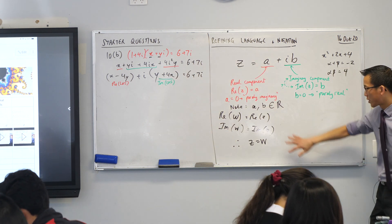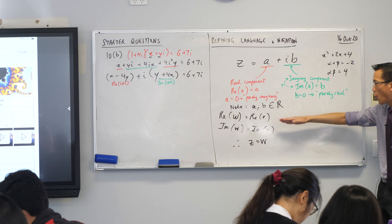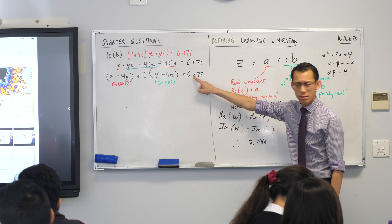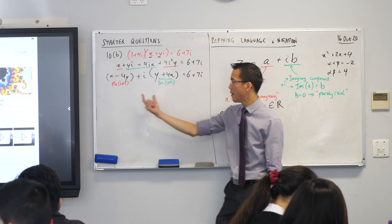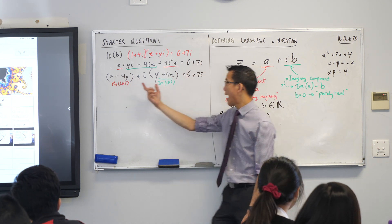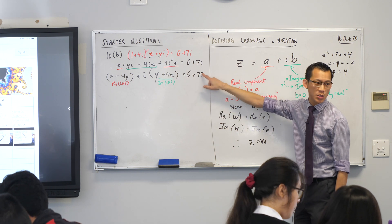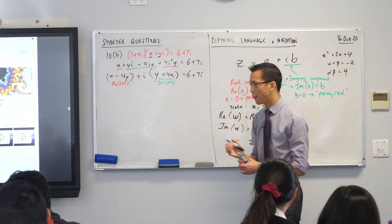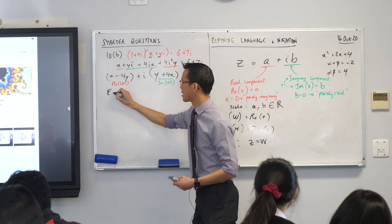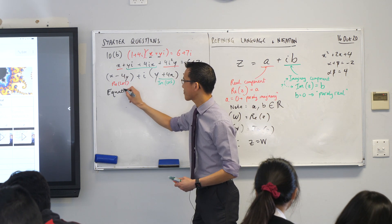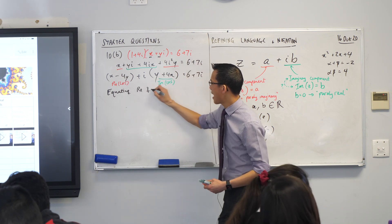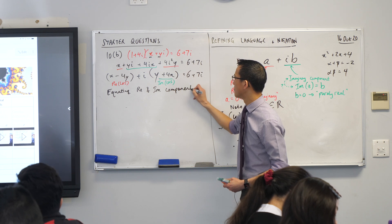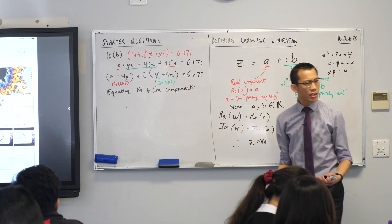But now I'm going to bring in what they suggested to us in the question. I'm going to equate the real part here with this real part here. Does that make sense? Like, there's nowhere else for this 6 to come from. It has to come from these terms. And likewise, there's nowhere else for this 7 to come from than from these terms. So in fact, what I then form, and we should write what we're doing, we should say equating the real and imaginary components.